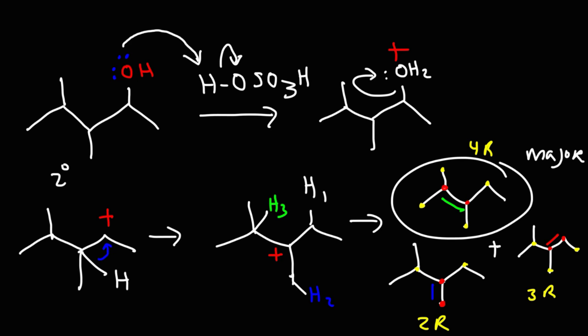Remember, when taking a test and dealing with an E1 acid-catalyzed dehydration reaction of alcohols with sulfuric acid, the major product is typically the most stable alkene that can be formed. So you want to look for the alkene that's highly substituted, particularly an internal alkene as opposed to a terminal alkene. From this point forward, we're just going to focus on drawing the major product and writing the mechanism to get there.